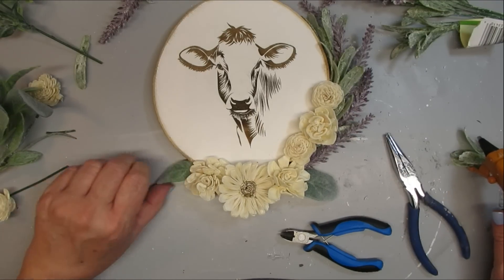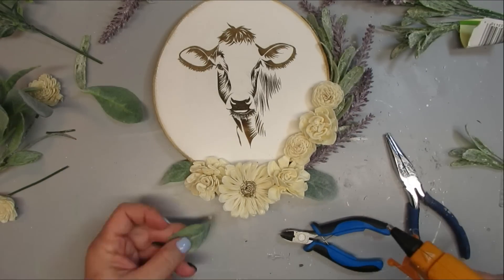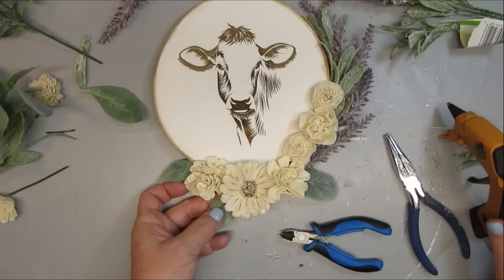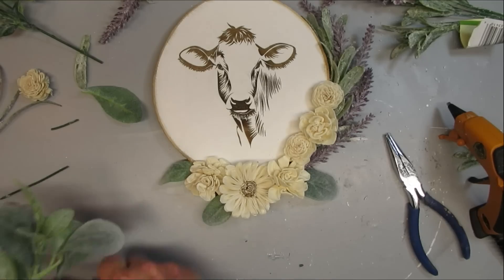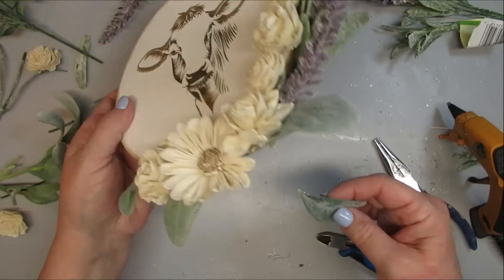Once I finish with that, I'm going to add a little bit more greenery down at the bottom and in between some of the sola wood flowers. And this project is finished. I had to include some type of lavender because that's my favorite farmhouse flower. Let me know what your favorite is down below.